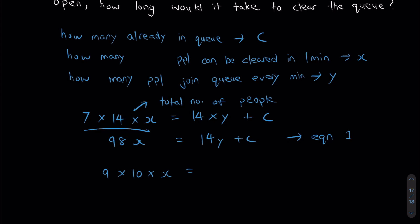That's going to be equals to 10 times Y plus C. And my second equation is out. I have 90X is equals to 10Y plus C. And I'm going to call this right here equation two.